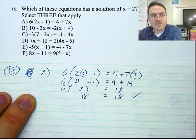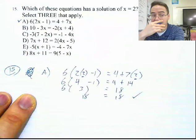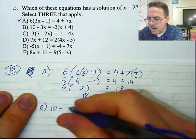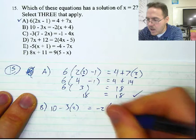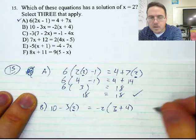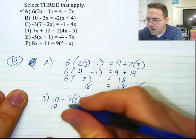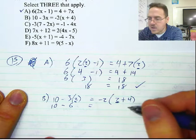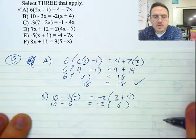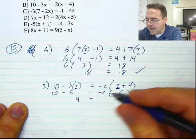Let's try B with the same method: 10 minus 3 times 2 equals negative 2 times 2 plus 4. That'd be 10 minus 6 equals negative 2 times 6. Well, 10 minus 6 is 4, and negative 2 times 6 is negative 12. That is not true — doesn't work. So I'm going to take B out of the running.